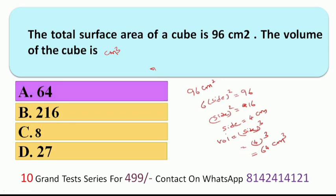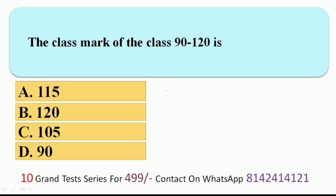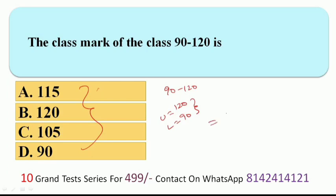Next question: the class mark of the class 90 to 120. Looking at nearby values among the options — 115, 120, 105, 90. The class mark is calculated as (lower limit + upper limit) / 2 = (90 + 120) / 2 = 105. So 105 is the correct answer.